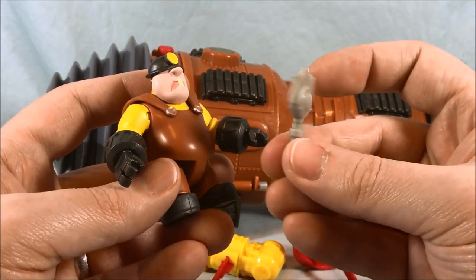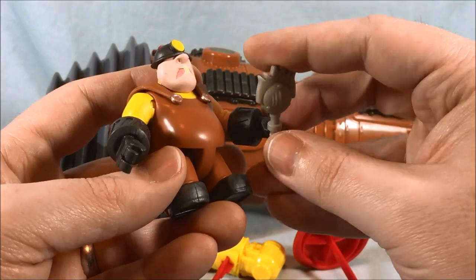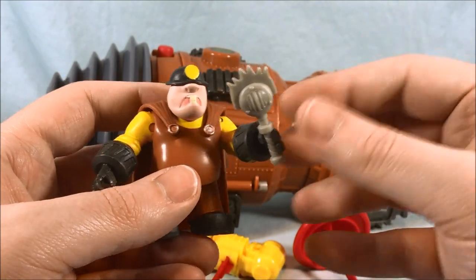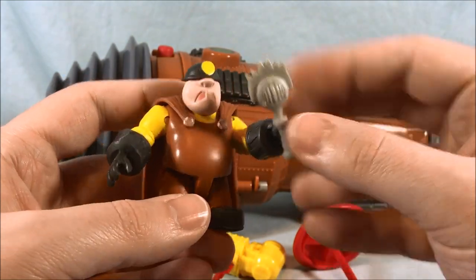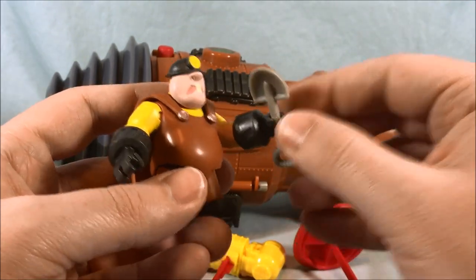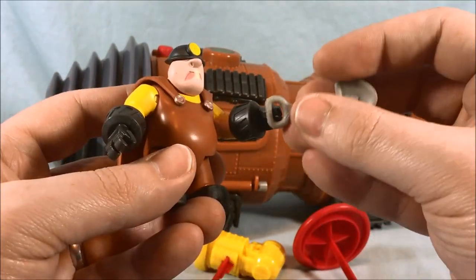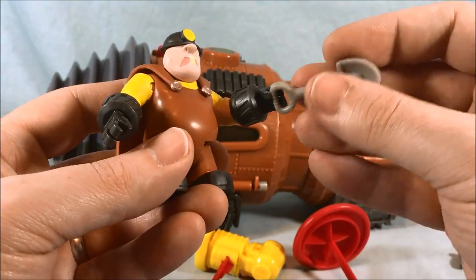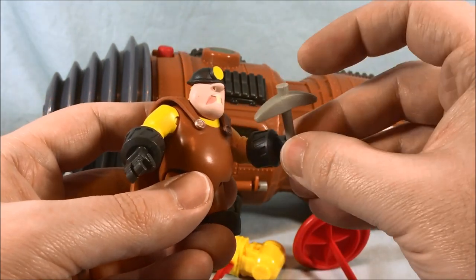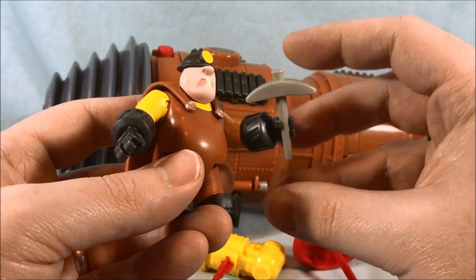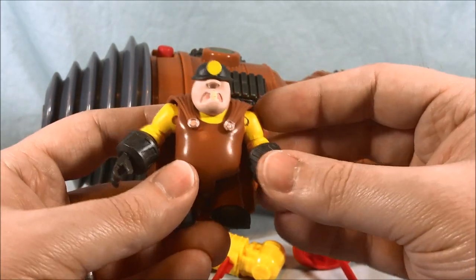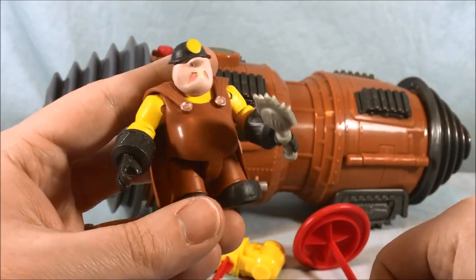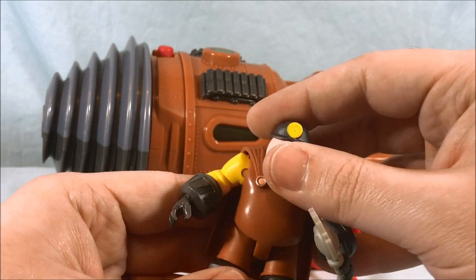He comes with a host of accessories here. He's got his little microphone for when he's making his loud declarations and declaring war on the city. He comes with a little shovel, which makes sense because he digs. You can hold it either way. And then he comes with a little pick. I appreciate that he actually comes with some accessories. He can hold all three of them. I like his little microphone so we'll leave that in his hand.